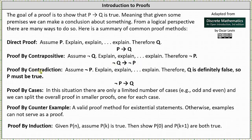We also have proof by contradiction. For this type of proof we assume not p, explain, explain, explain, therefore q is definitely false so p must be true. Proof by contradiction takes the form of if not p then q where q is false.